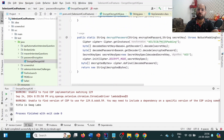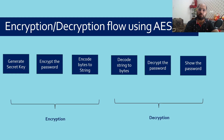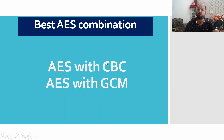This is how we can encrypt and decrypt a password using AES with ECB. As mentioned, ECB is a less secure technique, but we can always use CBC or GCM depending on the need. If you'd like a video on CBC or GCM, let me know in the comments and I'll create one. Thank you for watching — please like, share, and subscribe. Bye!